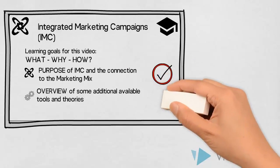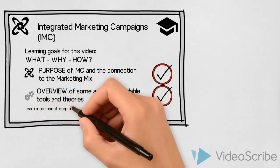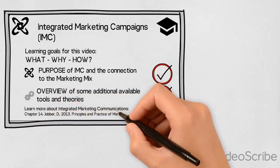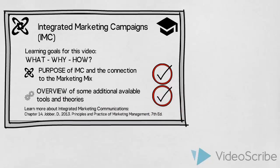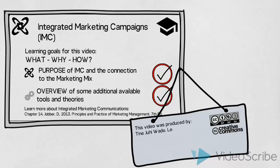We have now established an understanding of the purpose of integrated marketing campaigns, the different factors that make a campaign integrated, and an overview of some additional tools and theories available to us when designing an integrated marketing campaign. To learn more, I recommend that you read chapter 14 in David Jobber and Fiona Ellis-Chadwick's Principles and Practice of Marketing Management, 7th edition. My name is Tina Waid, thank you for watching.